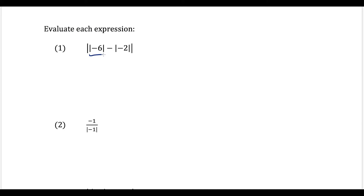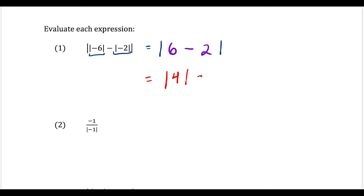We have absolute value with a lot going on inside. I like to think of absolute value almost like a set of parentheses, so we focus on the inside. First, deal with each absolute value term on the inside: the absolute value of negative six is positive six, and the absolute value of negative two is positive two. That gives us the absolute value of six minus two, which is four, and the absolute value of four is equal to four.